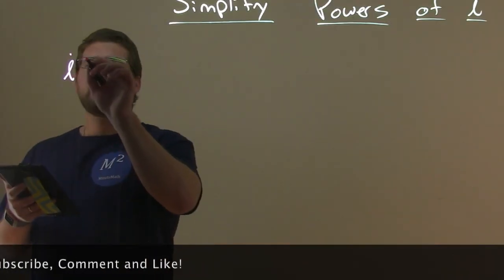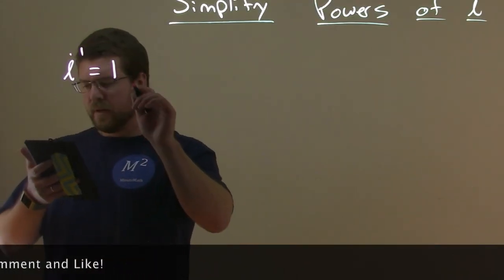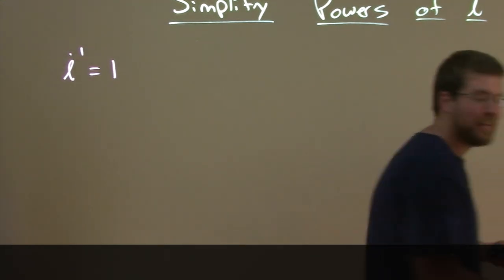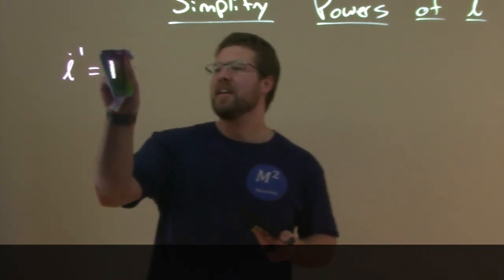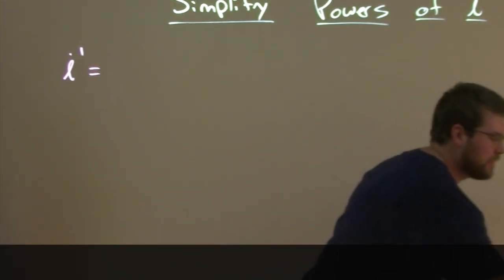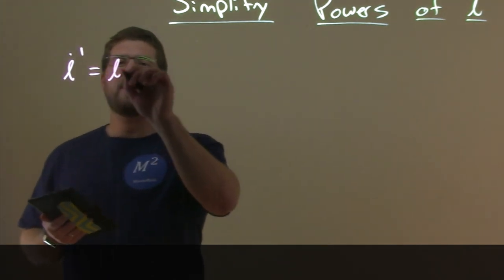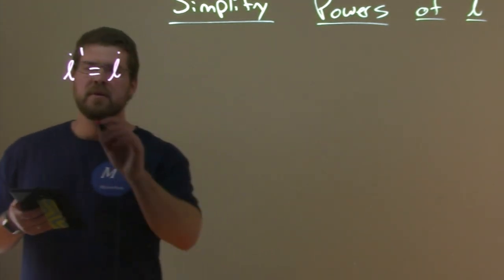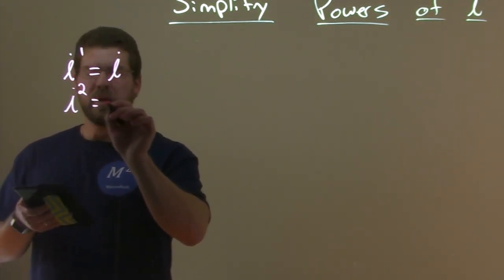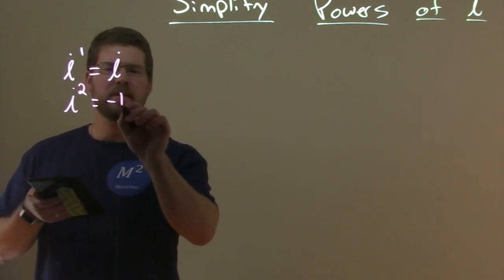Well, i to the first power is just equal to i. Then what's i squared? i squared, which we've learned before, is negative one.